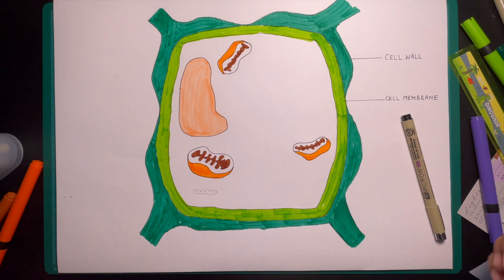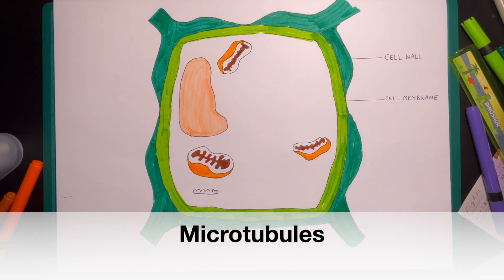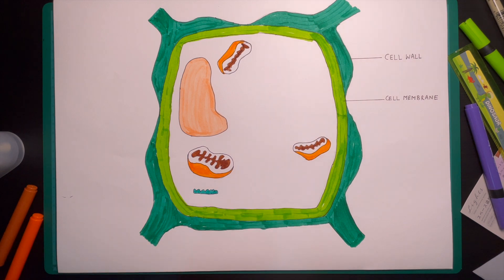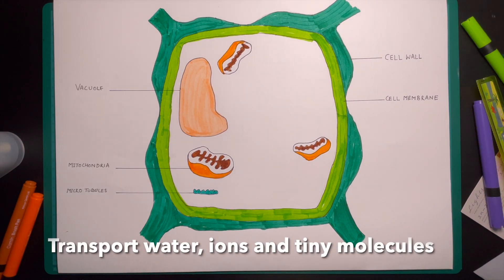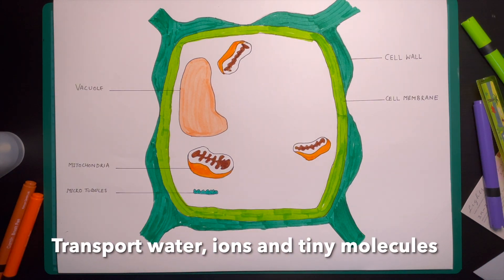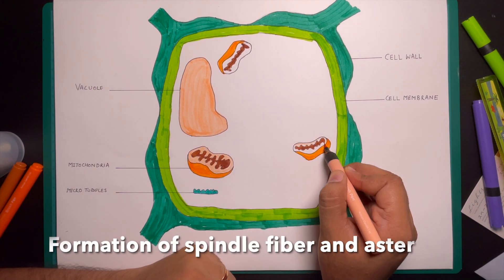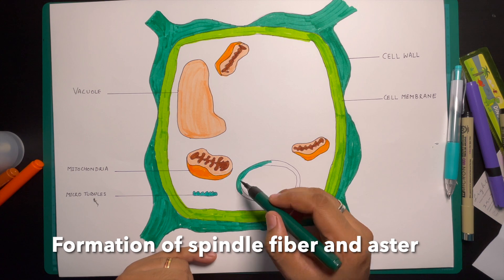Now the next plant cell organelles are microtubules. They are like tiny ducts in the cytoplasm of the plant cell. The main function is to transport water, ions and tiny molecules and also helps in the formation of spindle fiber and aster during cell division.